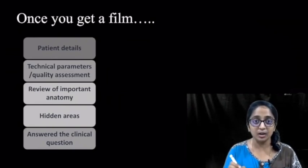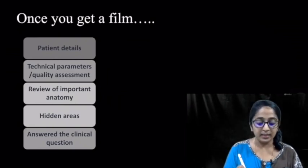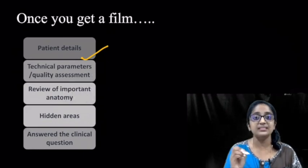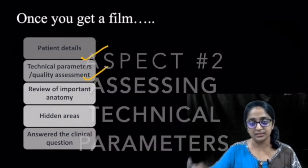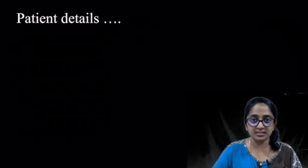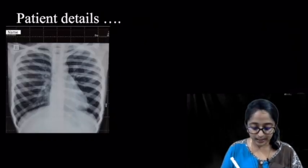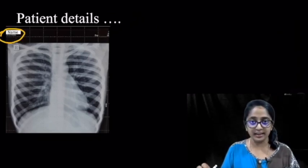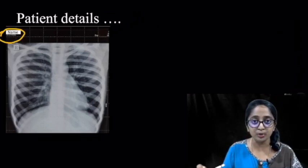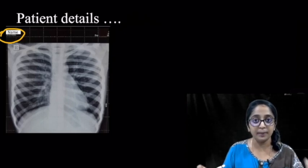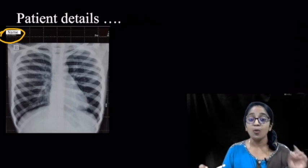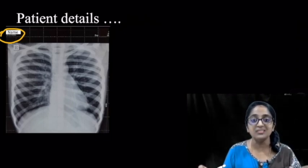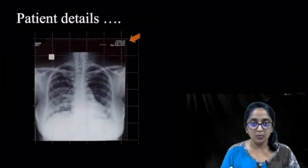In this video we'll be discussing two aspects: patient details and technical parameters. Regarding patient details, once you get a radiograph, first check the name to ensure the radiograph corresponds to the patient in question. Secondly, check the age of the patient, because certain diseases are more common in certain age groups.